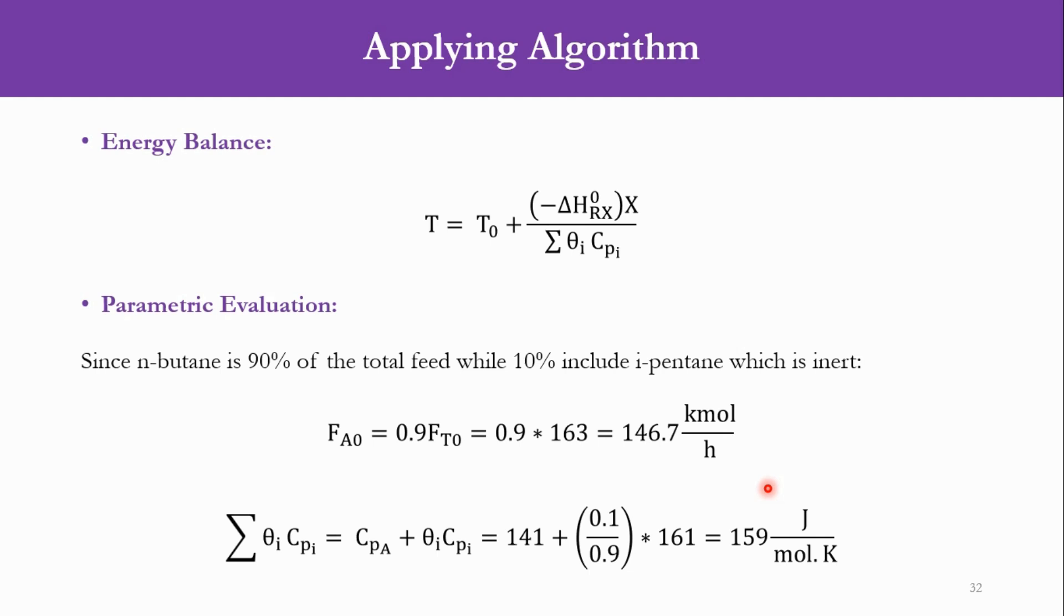As I have told you, we have to use the energy balance here because it is a non-isothermal system. This is the key difference between isothermal and non-isothermal systems. The equation is T = T0 + [(-ΔH_Rx)/Σθi×Cpi]×X. Now how can we calculate it? Let us go to the next step of parametric evaluation.